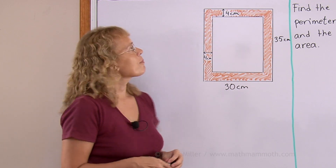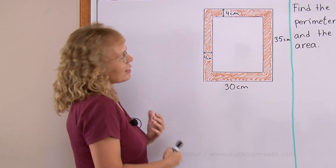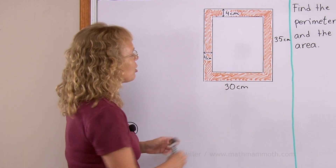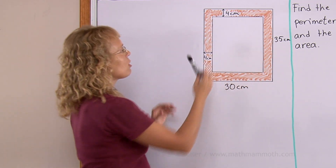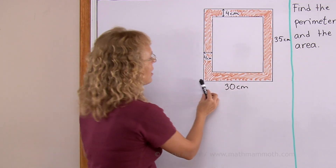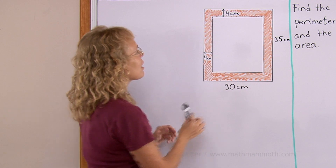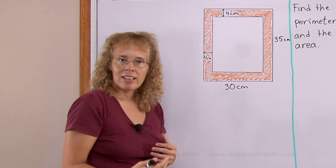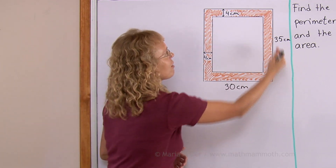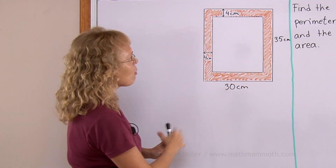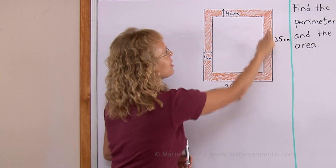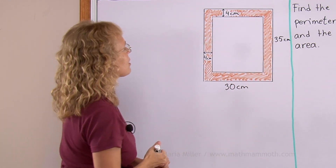There are at least two ways to solve it. One way that I like is to think of the two rectangles involved. The actual frame is an odd shape, but the inside is a plain rectangle and the outer shape is also a rectangle. If I find the areas of those two rectangles and subtract, what I have left is the area of the frame. So let me try that first.